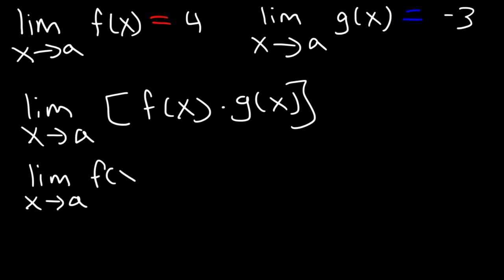You want to separate f of x and g of x, and then substitute it. So, this is going to be 4 times negative 3, which is negative 12.